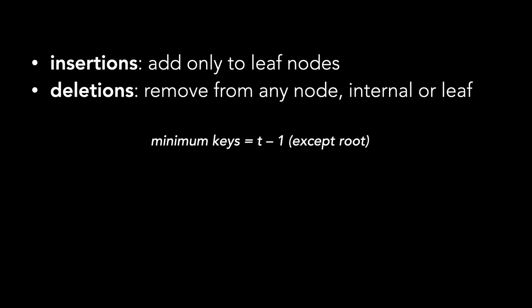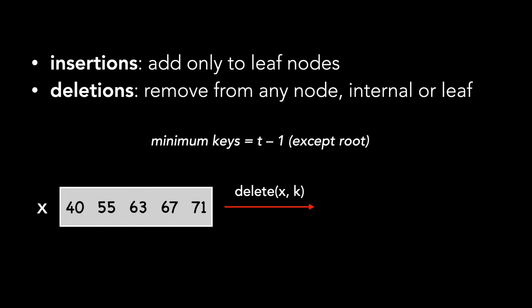We're going to code our algorithm in a way that when we call delete on a node X, X has at least T keys. Note this is one more than the required amount of T-1. This allows us to delete a key in one downward pass.